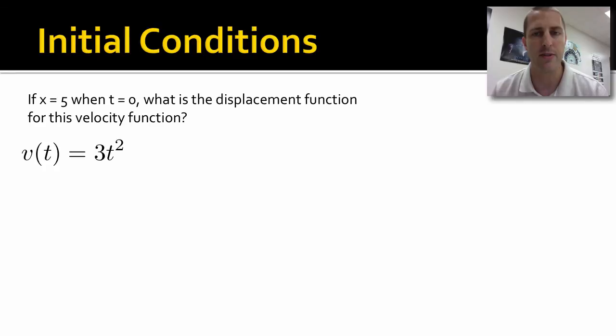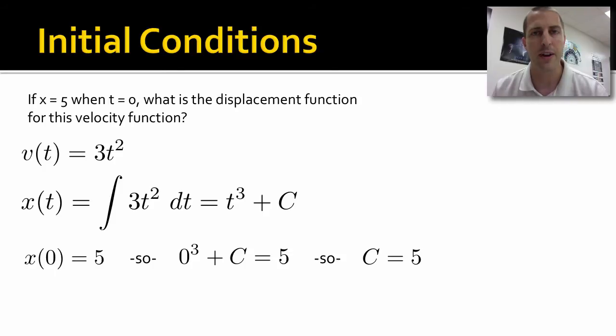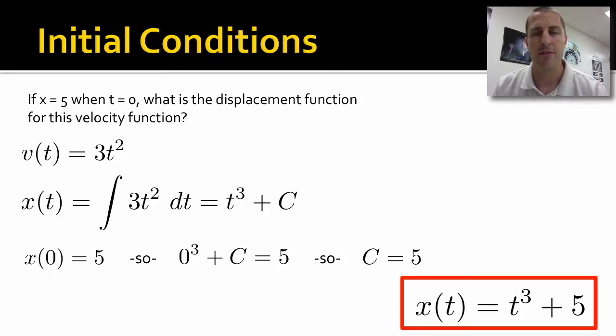We have a velocity function, 3t². We take the integral of that. We end up with t³ + C. Now we know that x(0), x at time 0, equals 5. So we plug in 0 for t. Solving for C, we find that C is 5. We plug that back into our function, and our final answer is our position function equals t³ + 5.